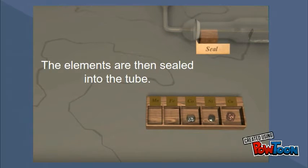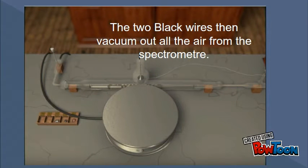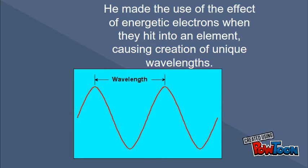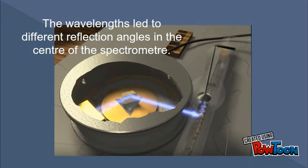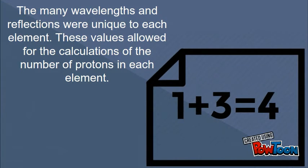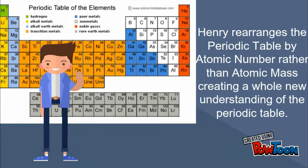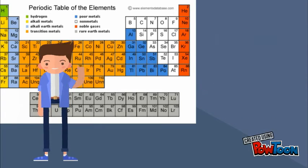The elements are then sealed into the tube. The two black wires then vacuum out all the air from the spectrometer. He made use of the effect of energetic electrons when they hit an element, causing the creation of unique wavelengths. The wavelengths led to different reflection angles in the center of the spectrometer. These many wavelengths and reflections were unique to each element, allowing for a calculation of the number of protons in each element. Henry discovered that the number of protons directly correlates to an atomic number. Henry then rearranged the periodic table by atomic number rather than atomic mass, creating a whole new understanding of the periodic table.